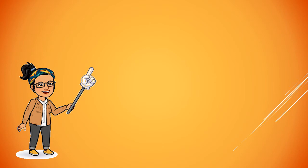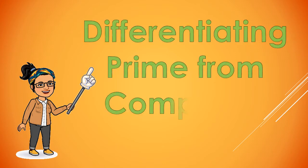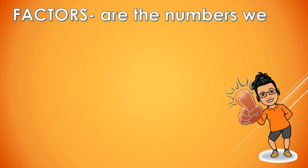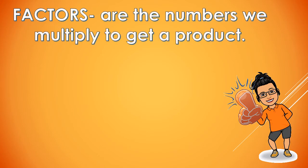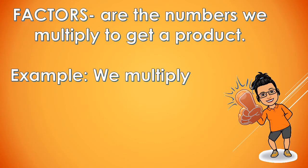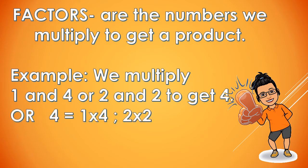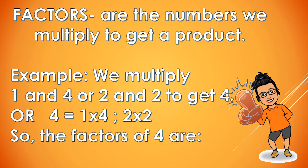Our topic for today is Differentiating Prime from Composite Numbers. Before we start, let's define factors again. Factors are the numbers we multiply to get a product. For example, we multiply 1 and 4, or 2 and 2, to get 4. So the factors of 4 are 1, 2, and 4.